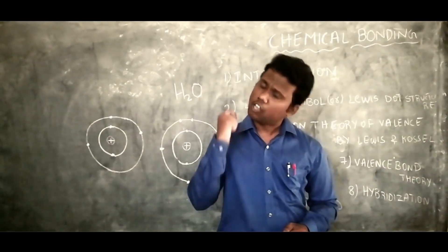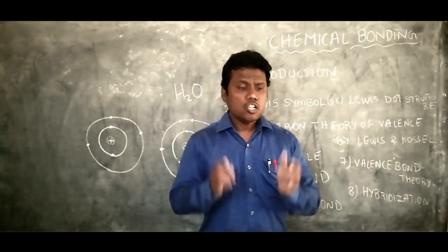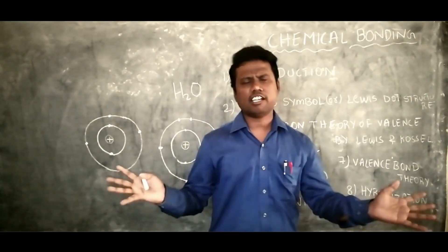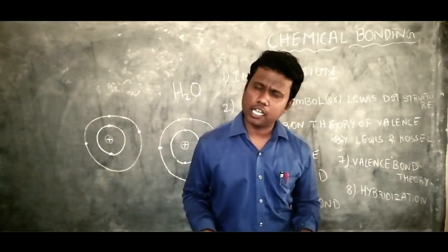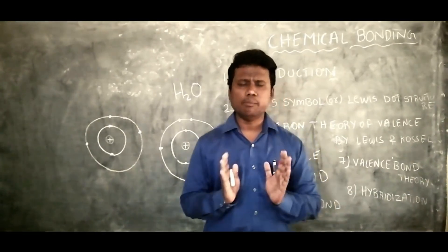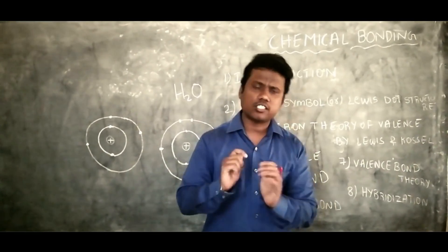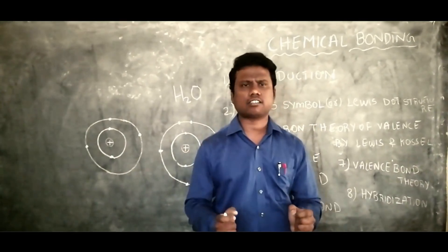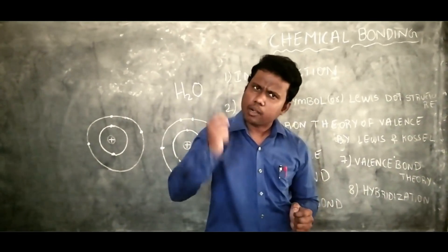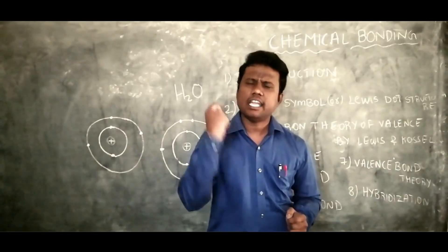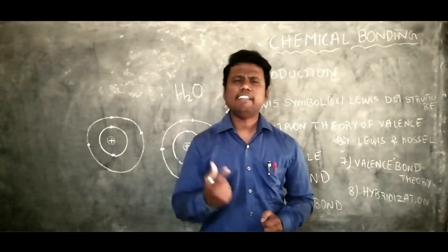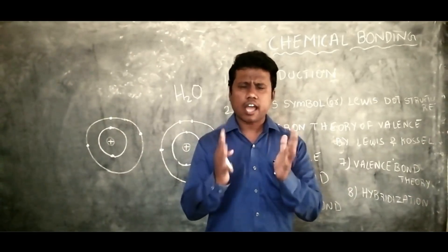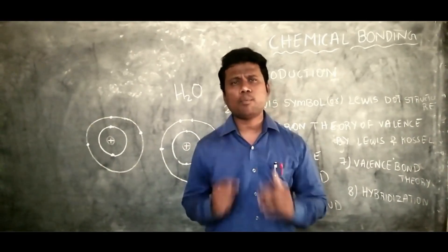Some elements can react vigorously forming chemical bonds, some react very slowly, and there are some elements in our periodic table that never participate in any chemical bonding. Now let us see what type of bond is present between two atoms.